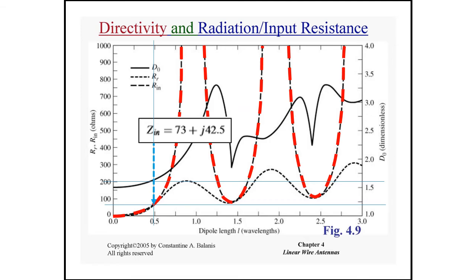The graph shows the input impedance of a half-wavelength dipole antenna as a function of dipole length. For a 0.5 lambda dipole, we can see the crossing point where the dashed line represents radiation resistance R_R, which is around 73 ohms. This also crosses the directivity line, which reads approximately 1.6, consistent with the previous slide.